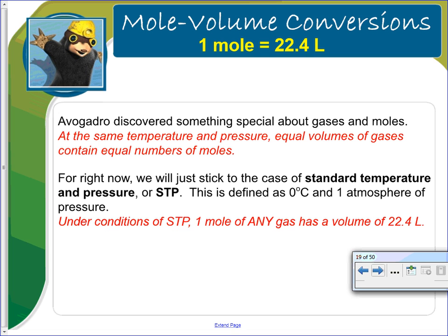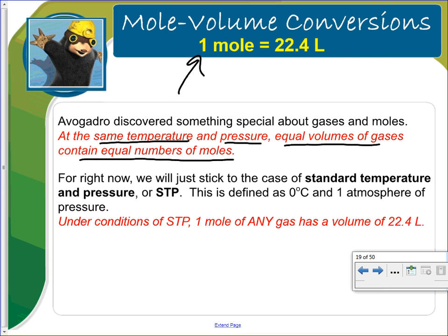Here's another conversion factor. We've already talked about one mole equals 6.02 times 10 to the 23rd particles, and one mole equals molar mass. But Avogadro also discovered that at the same temperature and pressure, equal volumes of gases contain equal moles. That gives us the conversion factor that one mole equals 22.4 liters at STP, which stands for standard temperature and pressure — at 0 degrees Celsius and 1 atmosphere. Under these conditions, one mole of any gas — neon, carbon dioxide, oxygen — always has a volume of 22.4 liters.